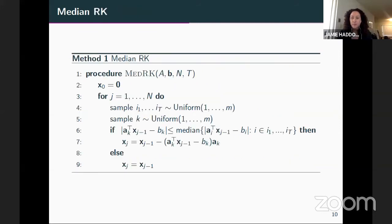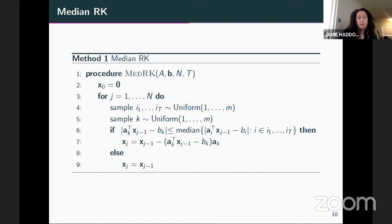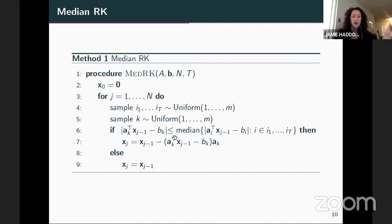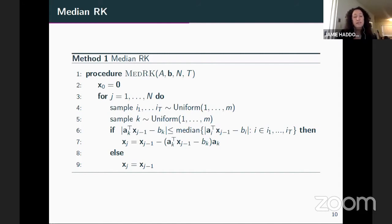For efficiency, instead of comparing to the median of all distances, we subsample a collection of rows and compare to the median of that subsampled set. An audience member asks: if the distance is large, do we discard or keep that equation? We keep it — we can resample it. The pseudocode samples some rows for comparison, samples a single index, and compares its residual to the median of the subsampled residuals. If it's below the median, we take that RK projection; otherwise we stay in place.